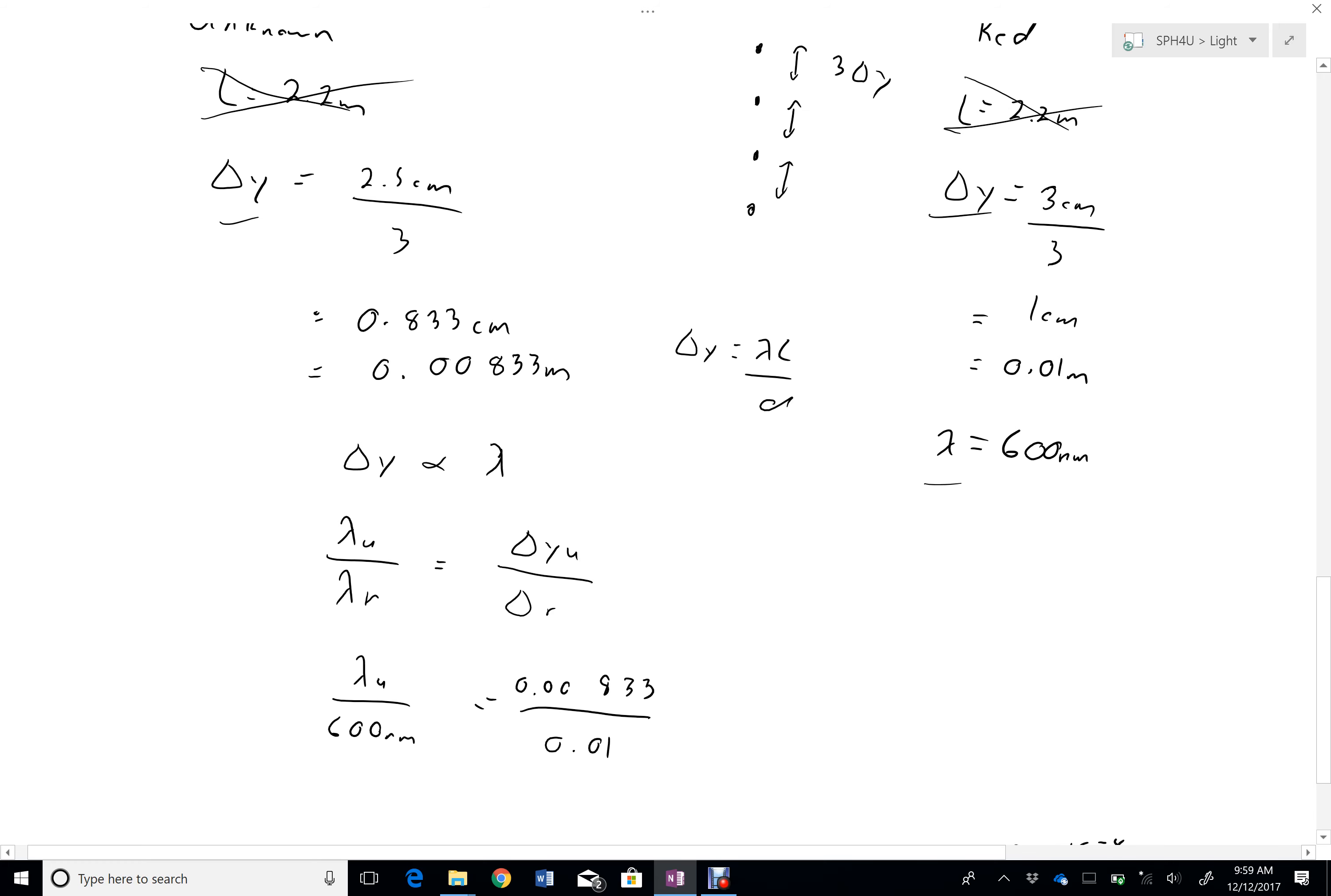And so that, and then I multiply the 600, and I get my lambda unknown to be 500 nanometers.